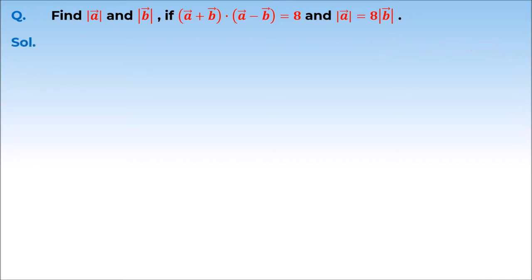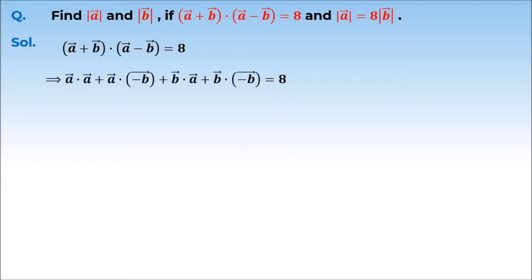So let's solve this. We have given that A vector plus B vector dot A vector minus B vector is equal to 8. To further simplify, we can write A vector dot A vector as the magnitude of A vector squared.